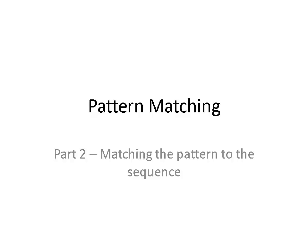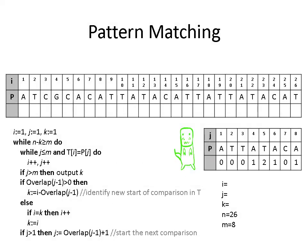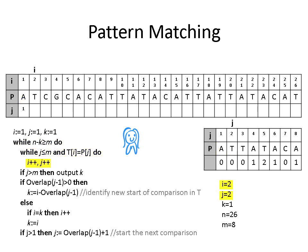Now that we've precomputed the overlap of our pattern, we can search for it in our target string, which in this case is a short sequence of Sally's DNA. We initialize I, J, and K all as 1 — I being the current position in our target sequence, J the position in our pattern, and K as a marker for the start of any potential matches. For the first position in our target sequence, we have a match with the first position in our pattern, so I and J are both incremented. In the second position we have another match, so I and J are again incremented. However for the third position, we do not have a match, so we exit the while loop. In the else statement, we set K equal to I, which is 3, and J is greater than 1, so we use the overlap to find the start of the next comparison. In this case the overlap is 0, so J is set as 1.